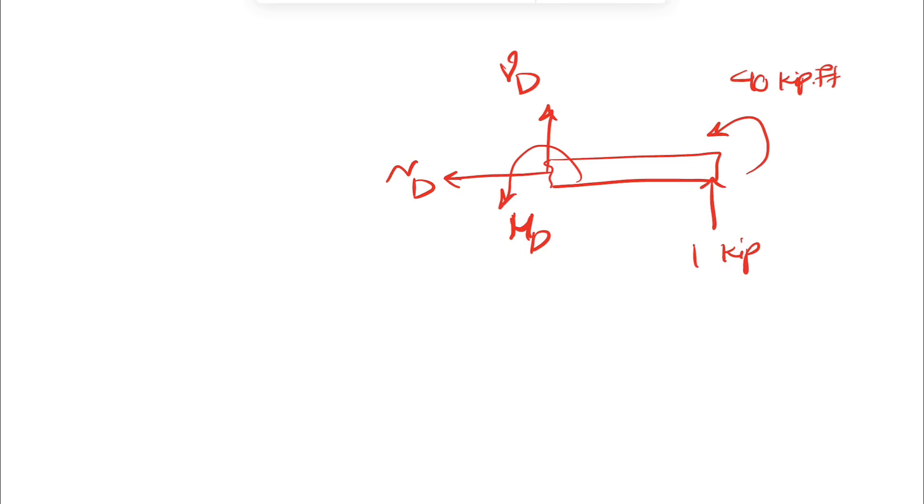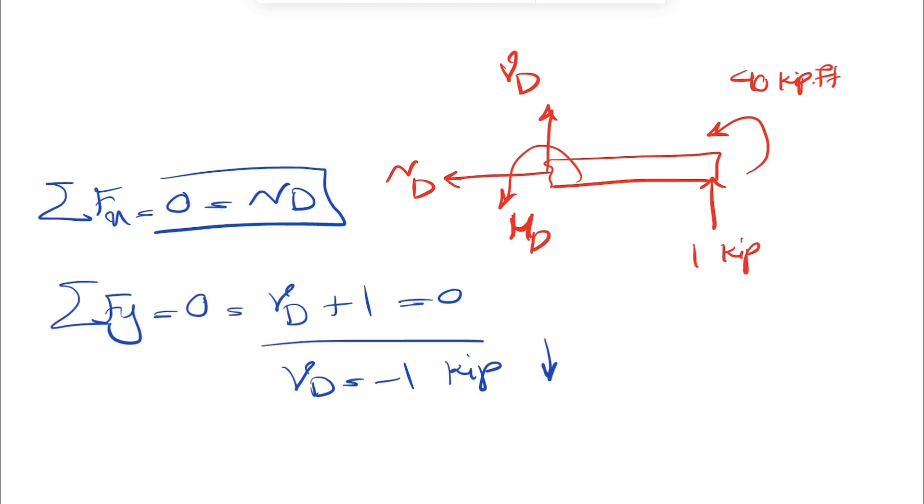That's pretty much everything for the free body diagram. Let's do our equilibrium equations. Sum of all forces in X equals 0. There is only Nd here. So Nd is 0. We can do sum of all forces in Y equals 0. That's going to be our Vd, which is what we are trying to figure out, plus 1 equals 0. So Vd here is actually negative 1 kip. So Vd is actually downward.